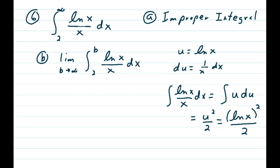Part b, we make it a proper integral by taking the limit as b approaches infinity of the proper integral from 2 to b of natural log of x over x dx.